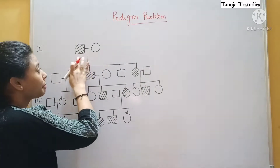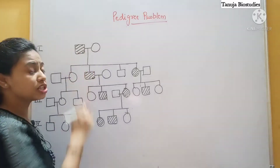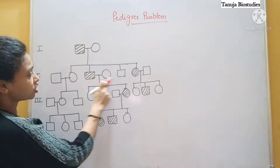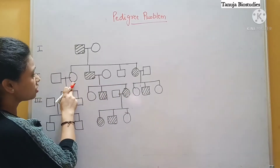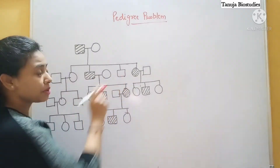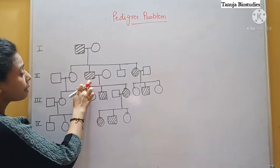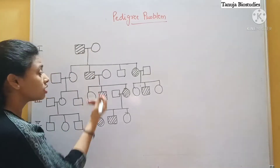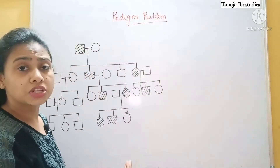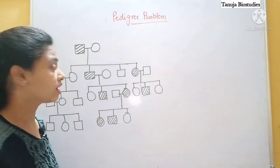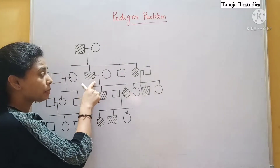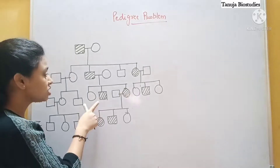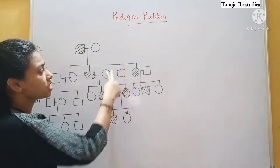First of all, we will see that one male from Generation 1 is affected. When we observe through the generations, we also see affected individuals in Generation 2. Now, when we see the transfer of the trait - whether it is happening in every generation or not - we look at the next generation marriages and consider those affected children.